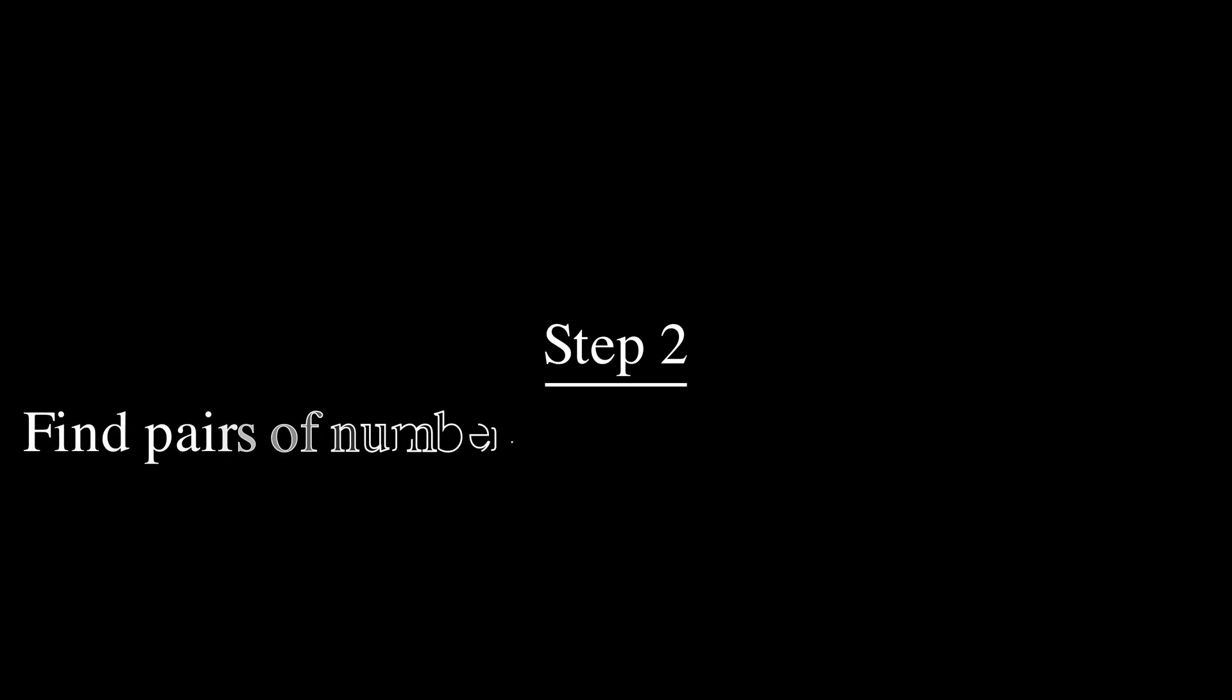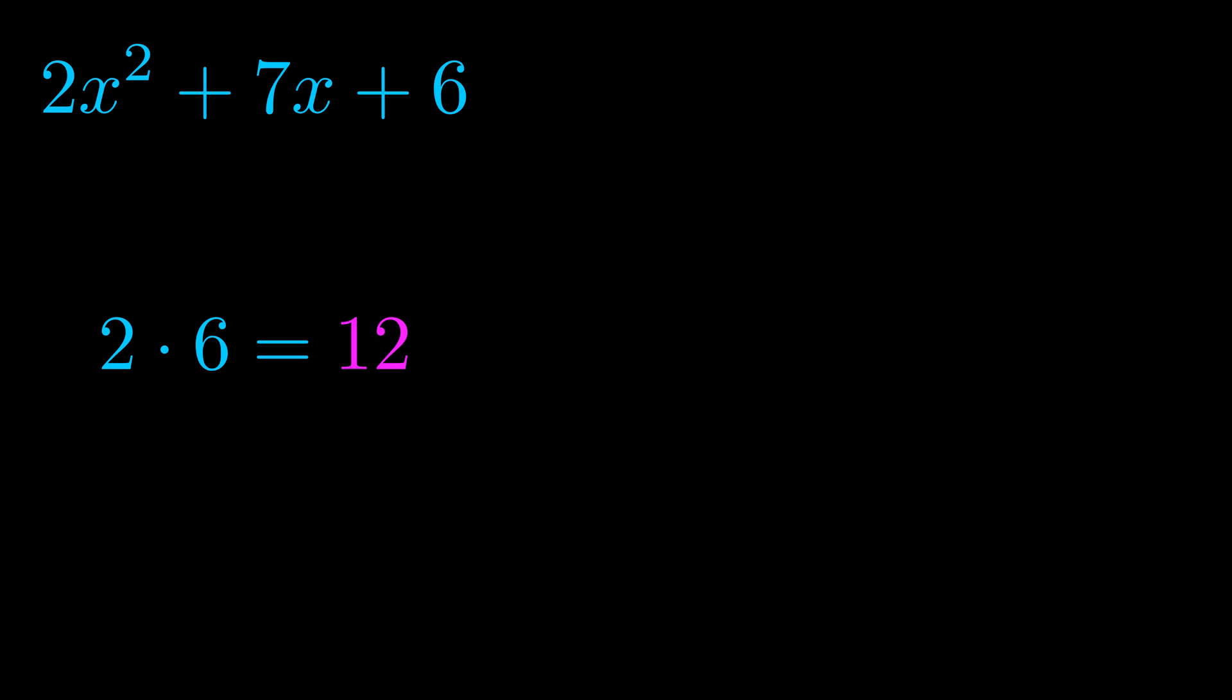Step two is to try to find all of the pairs which multiply to this number. Now it turns out you don't really need to find all of them, but go ahead and write down as many numbers as you can that multiply to the magenta value for now. Pause the video and resume when you're ready to continue. Okay, here's what I came up with.